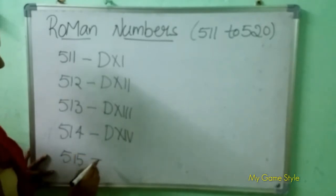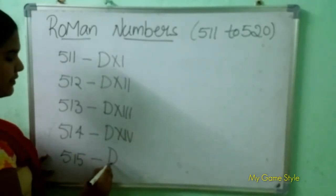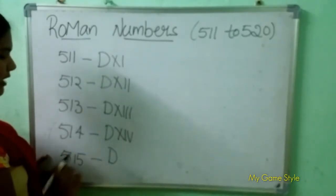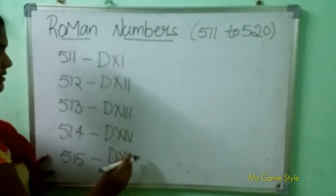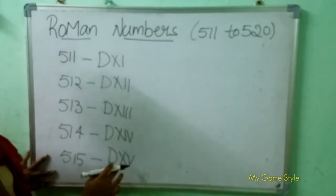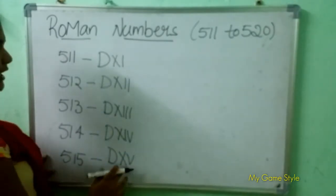515 means 515. D is 500. XV is 15. So this means 515.